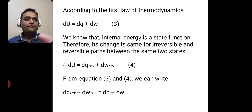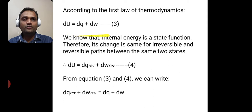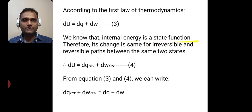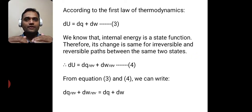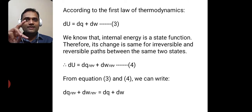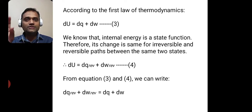According to the first law of thermodynamics, the mathematical statement is du is equal to dq plus dw. This is equation 3. Now we know that internal energy is a state function — it depends upon the initial state and final state of a system. Therefore, its change is the same for reversible and irreversible paths between the same two states. So whether the path from state 1 to state 2 is reversible or irreversible, the change in internal energy is the same.